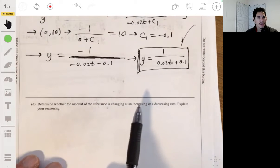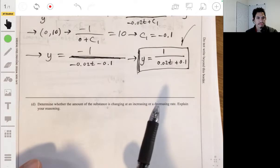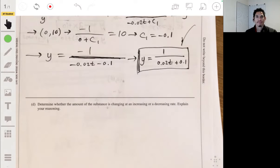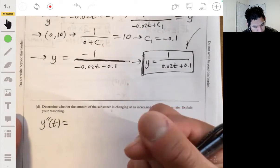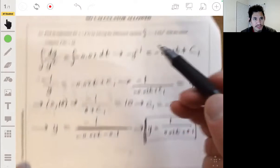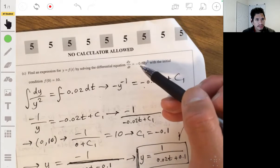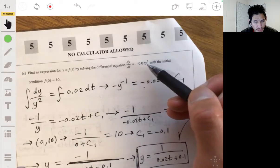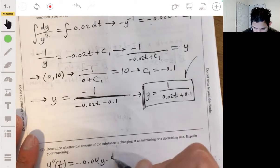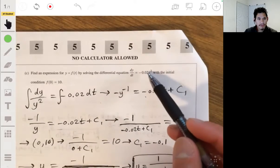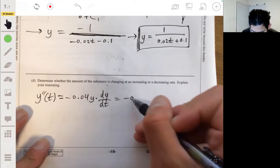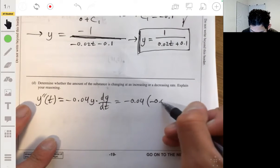Part D. Determine whether the amount of substance is changing at increasing or decreasing rates. Explain your reasoning. This is kind of like one that's meant to get you with thinking about just the derivative. But here you have to think about the derivative of the derivative. So you want to think about the second derivative. You want to think about what's going on with y double prime of t. So what we want to do is find this derivative, which means we take the derivative of this, which would be negative 0.04y times dy dt.